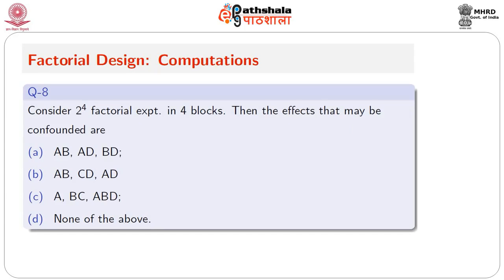This time again it is a 2⁴ in 4 blocks — a tricky question about which effects may be confounded. If there are 4 blocks, 3 effects will be confounded, but only 2 are independent; the third is their generalized interaction. For AB and AD, their generalized interaction is BD — that is possible. For AB and CD, the generalized interaction is ABCD — so that combination is not valid. AB, AC, ABD — also not valid. Therefore AB, AD, BD is the right choice.